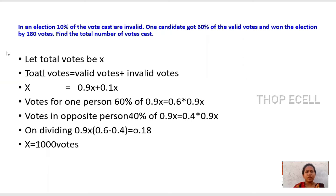Second problem: In an election, 10% of vote cast are invalid. One candidate got 60% of valid votes and won the election by 180 votes. Find the total number of votes.